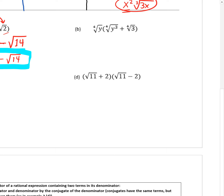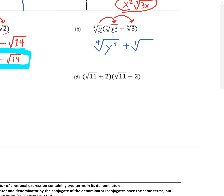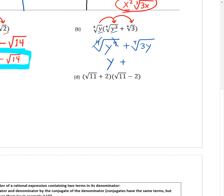Part B: distributing the fourth-root of y into (∜(y³) + ∜3). We get fourth-root of y times ∜(y³): adding powers, y¹ times y³ gives y⁴, so the fourth-root of y⁴. Plus the fourth-root of y times ∜3 gives ∜(3y). The first term simplifies because the index and power are exactly the same — they cancel, giving just y. For the second term, there's nothing more to simplify, so the answer is y + ∜(3y).